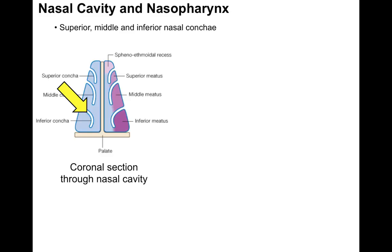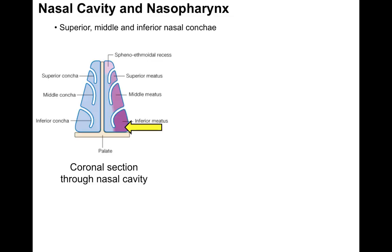The turbinate bones come out from the lateral nasal wall. Underneath each of them, they have spaces called the superior meatus, middle meatus, and inferior meatus. As air comes into the nasal cavity through these meati, it is swirled and touches the mucosal lining. The air is warmed up, filtered, and humidity is added so it doesn't dry out the nasal mucosa.